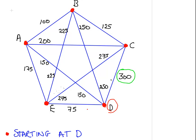We can go to C, we can go to B, we can go to A, or we can go to E. Well the nearest neighbor for D is E.